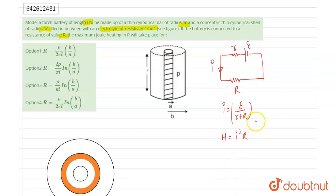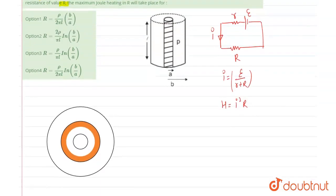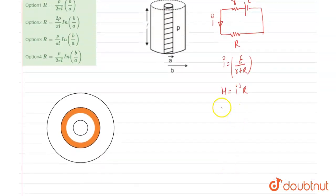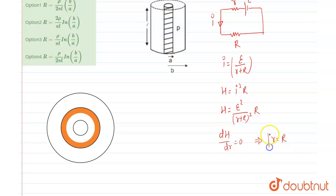So the heating in the resistance is equal to I square R. And now we will put the value of current in that relation. That is H is equal to E square upon r plus capital R whole square into R. So when we find dH over dR equal to zero, we will get R is equal to capital R.